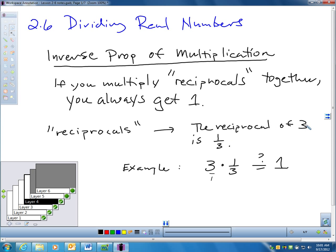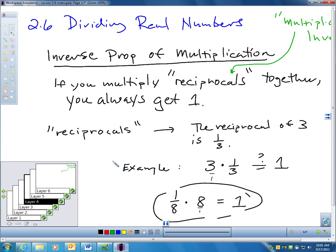So the Inverse Property of Multiplication just simply says, if you multiply reciprocals together, you'll always get 1 for a response. And remember, a reciprocal is simply taking a number, flipping it. That would be the reciprocal of that number. Like 1 eighth times 8 is 1. You can notice, if I take the reciprocal of 1 eighth, if I flip 1 eighth, I get 8 over 1. 1 eighth times 8 is 1.